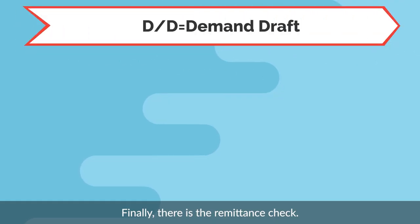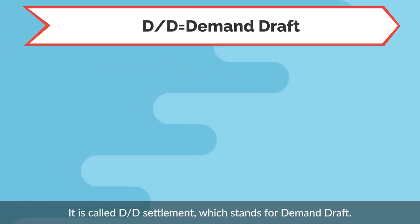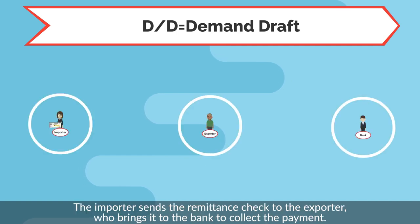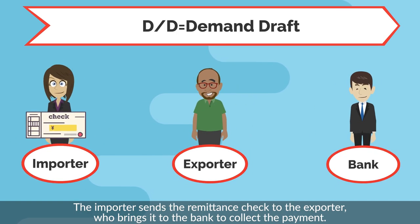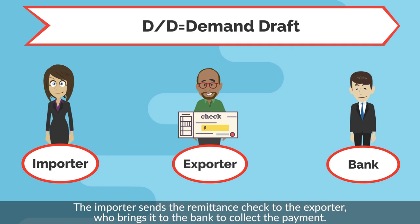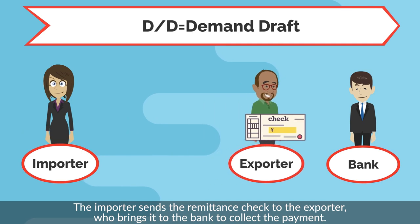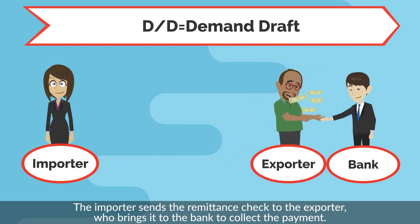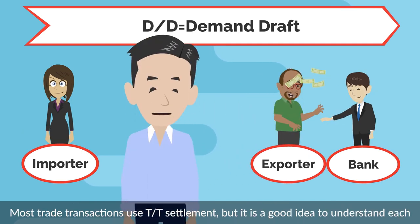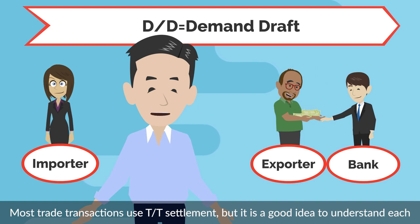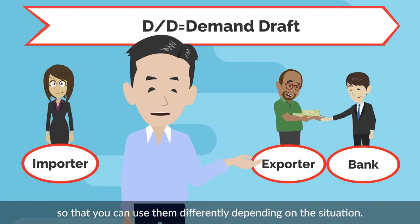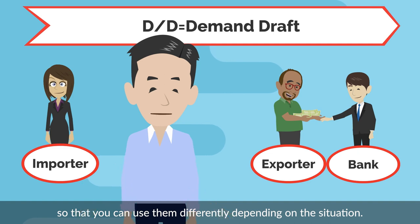Finally, there is the remittance check, called DD Settlement, which stands for demand draft. The importer sends the remittance check to the exporter, who brings it to the bank to collect the payment. Most trade transactions use TT Settlement, but it is a good idea to understand each so that you can use them differently depending on the situation.